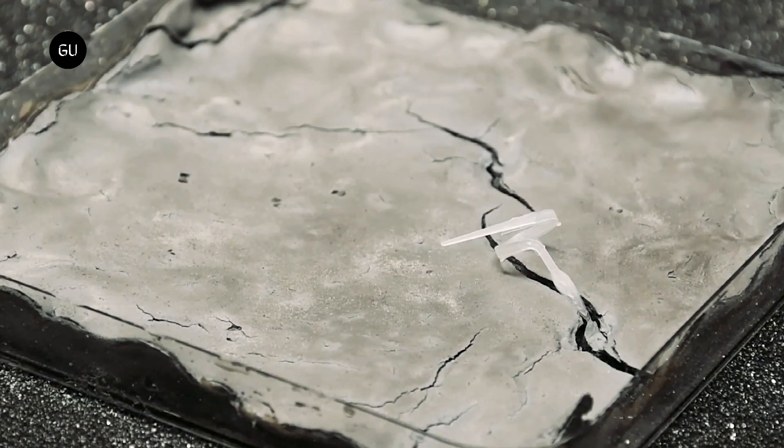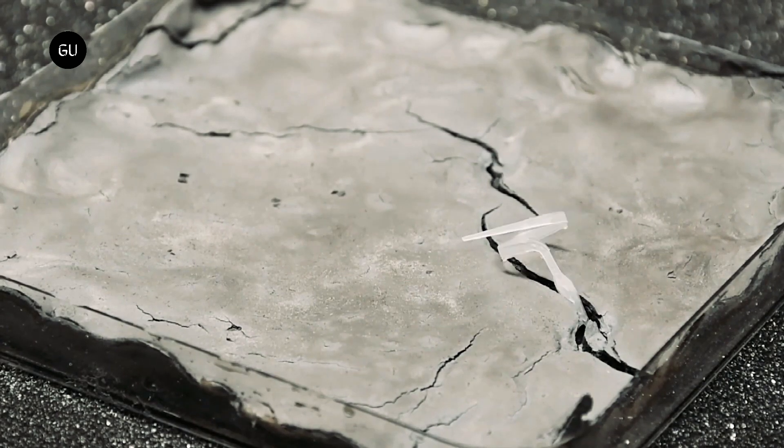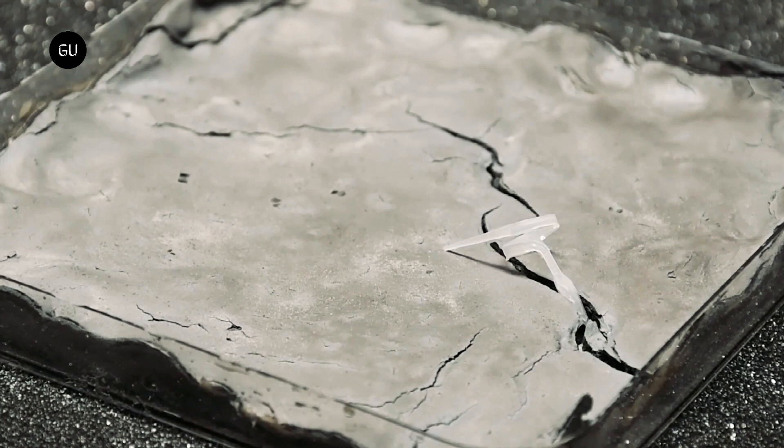Geranium has a seed-carrying structure known as hygromorphic structure, as per the study. This plant seed can change shape in response to environmental factors such as humidity changes.